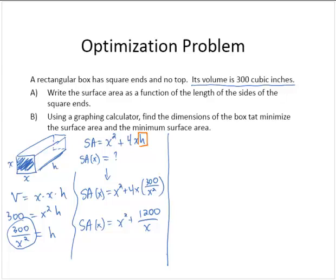Part B, using a graphing calculator, find the dimensions of the box that minimize the surface area and the minimum surface area. Alright, so we have the surface area function. Let's graph it on the calculator and see where it reaches the minimum.